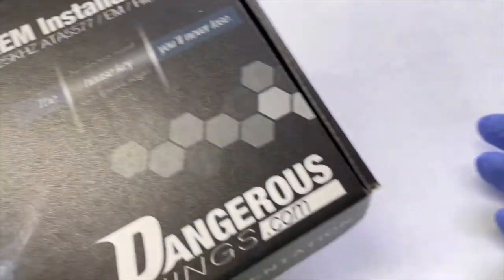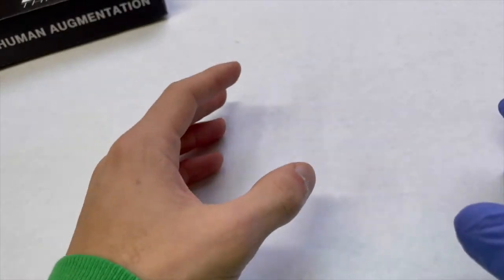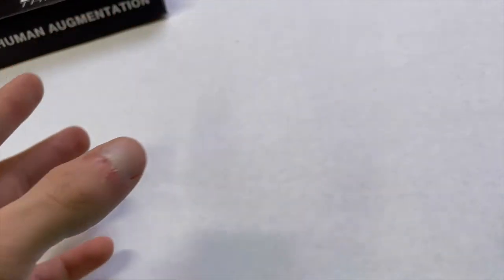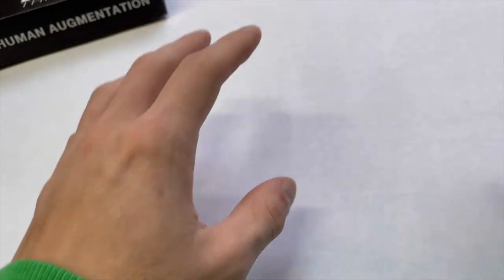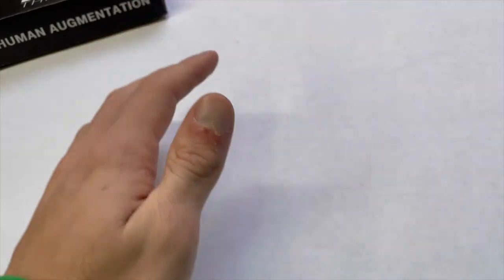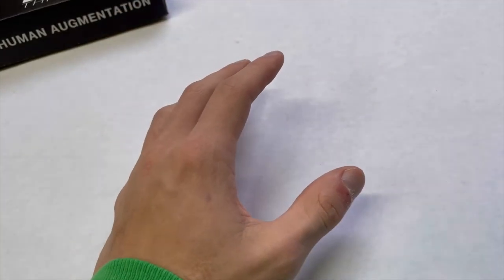Well, you can just order the kit from the Dangerous Things website, and get it shipped to your door. You could put it in yourself, like I did, but I don't recommend doing that. There's trained piercers throughout the country that can easily do this procedure, in a much cleaner environment, and in much safer conditions.